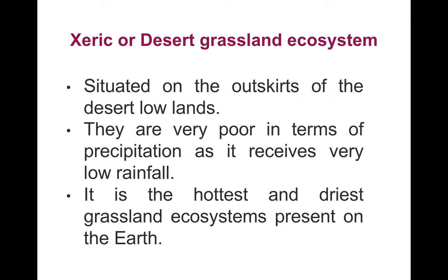Xeric or desert grassland ecosystems are situated on the outskirts of desert lowlands. They receive very low rainfall, making them the hottest and driest grassland ecosystem on Earth.